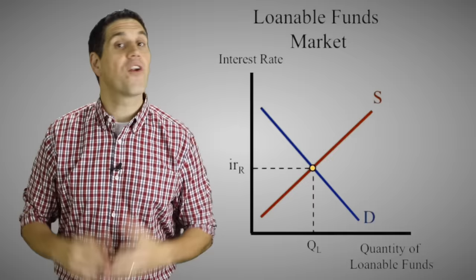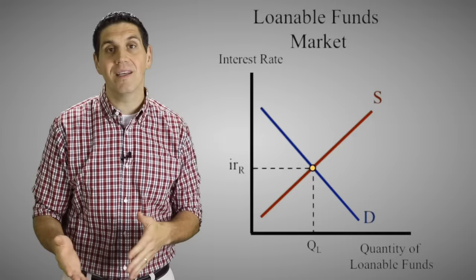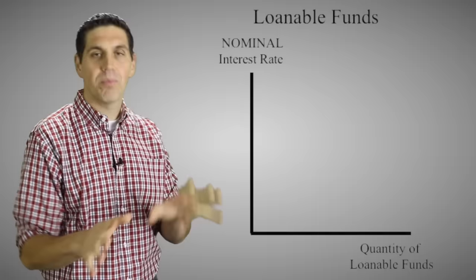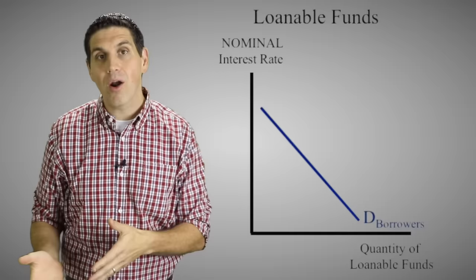For long-run decision making we use a different graph: the loanable funds market. The money market graph shows supply and demand for money, but the loanable funds market shows supply and demand for loans — people's willingness to save and invest, that is, people's willingness to lend and borrow. The demand for loanable funds is the amount that individuals, businesses, and the government are willing to borrow at different interest rates, and the supply is the amount of money available to be lent out.